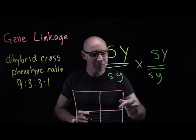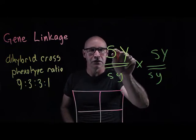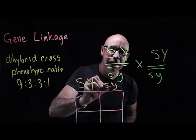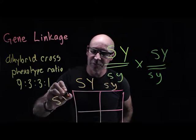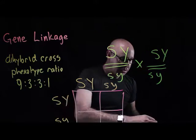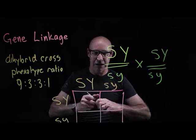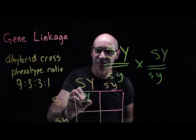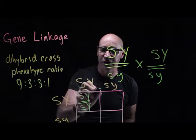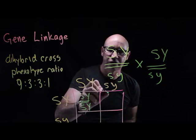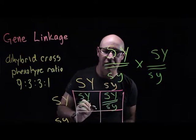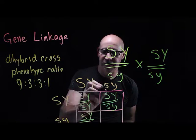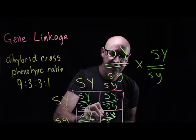Because they are linked, we've only got two options for our alleles: capital S, capital Y as one, and small s, small y as the other. So the Punnett square gives us: capital S capital Y / capital S capital Y, capital S capital Y / small s small y, capital S capital Y / small s small y, and small s small y / small s small y.